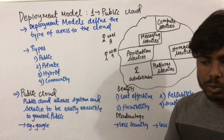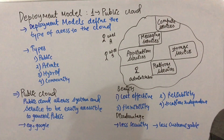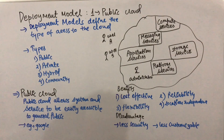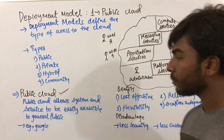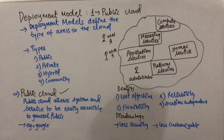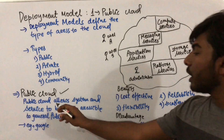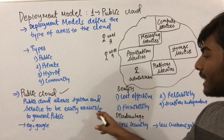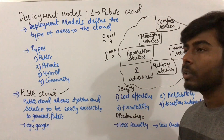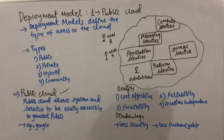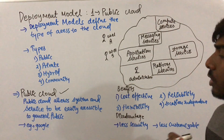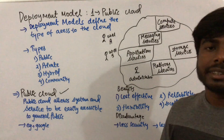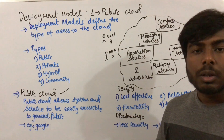There are four types of access to the cloud: first one is public, second one is private, third one is hybrid, and fourth one is community. We will discuss first the public cloud. Public cloud allows systems and services to be easily accessible to the general public. IT giants like Google, Microsoft, and Amazon all provide services through the internet, so they are providing public cloud.